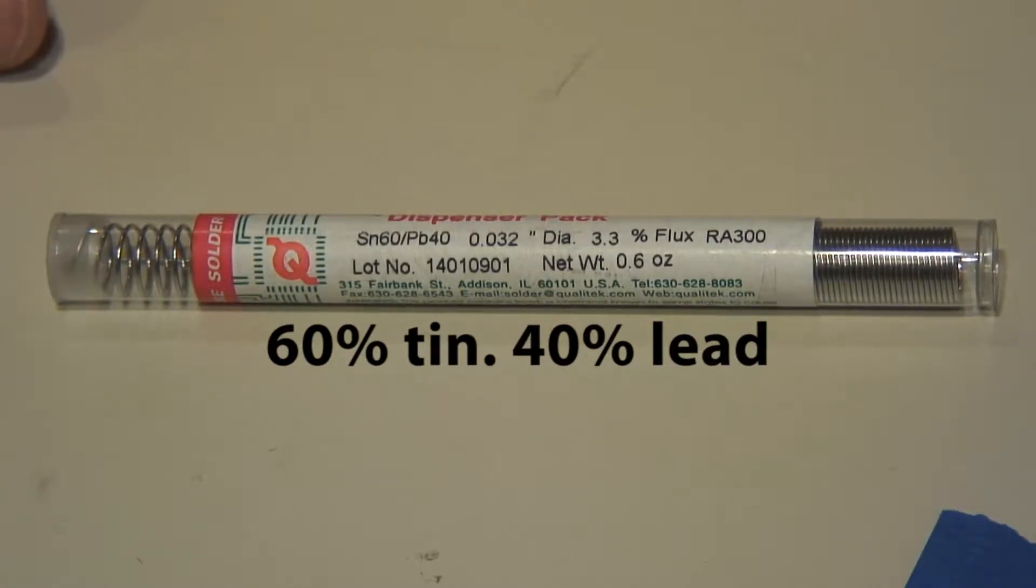60-40, and then it is flux core, which to me is much easier to use and will make your soldering life much easier. If you're worried about lead residue or fumes, you can make sure you scrub your hands after using it or you can use a fume extractor as well.